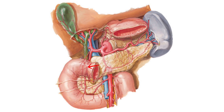The gastroduodenal artery then descends posterior to the superior part of the duodenum. At the lower border of the superior part of the duodenum, it terminates into the anterior superior pancreaticoduodenal artery and the right gastro-omental or gastroepiploic artery.